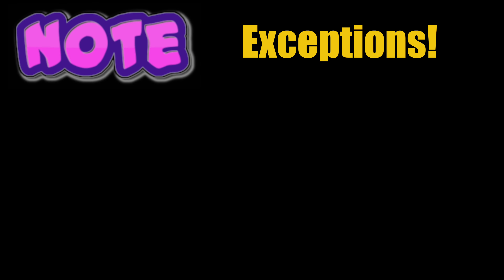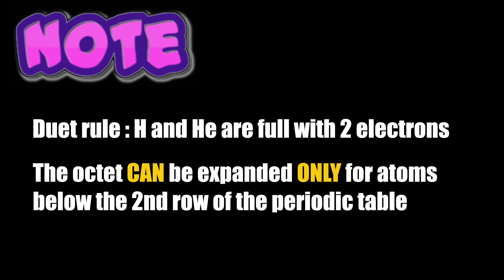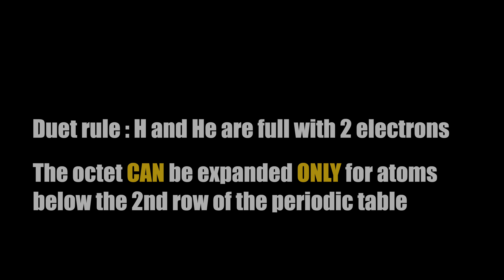Please note that there are exceptions to this octet rule. Hydrogen and helium follow the duet rule, which says their valence shell is full with 2 electrons. Also, the octet can be expanded beyond 8 electrons, only for atoms below the second row of the periodic table.